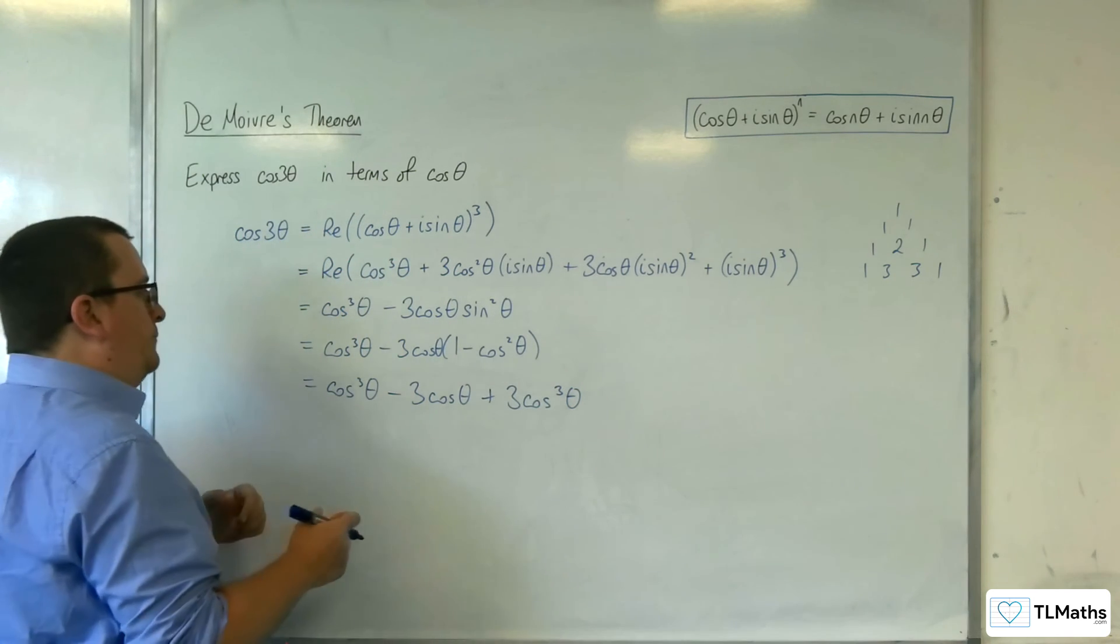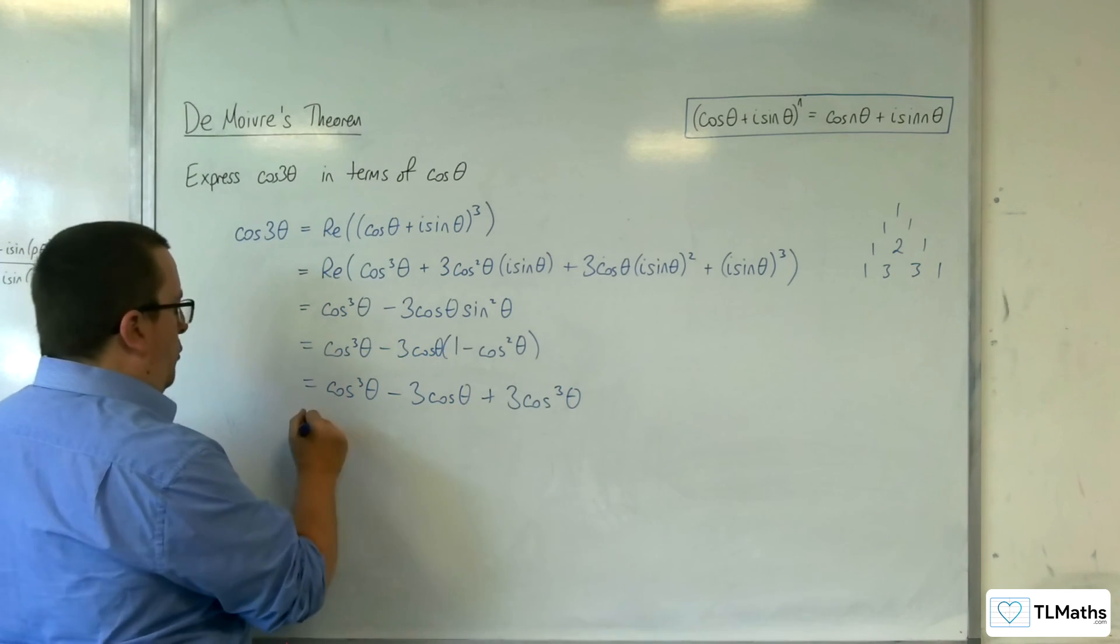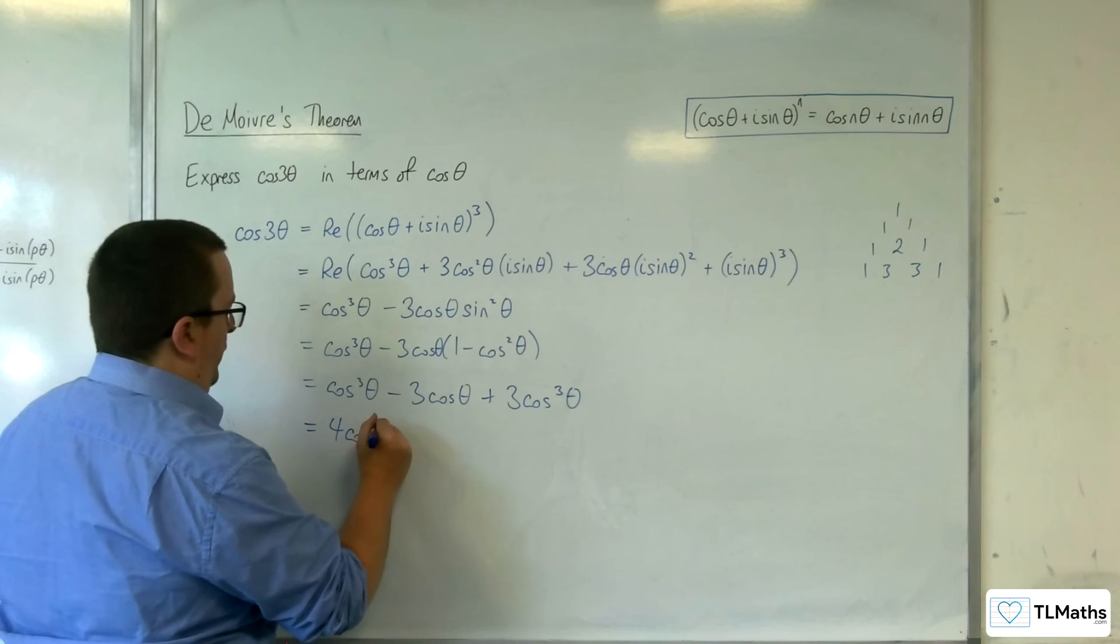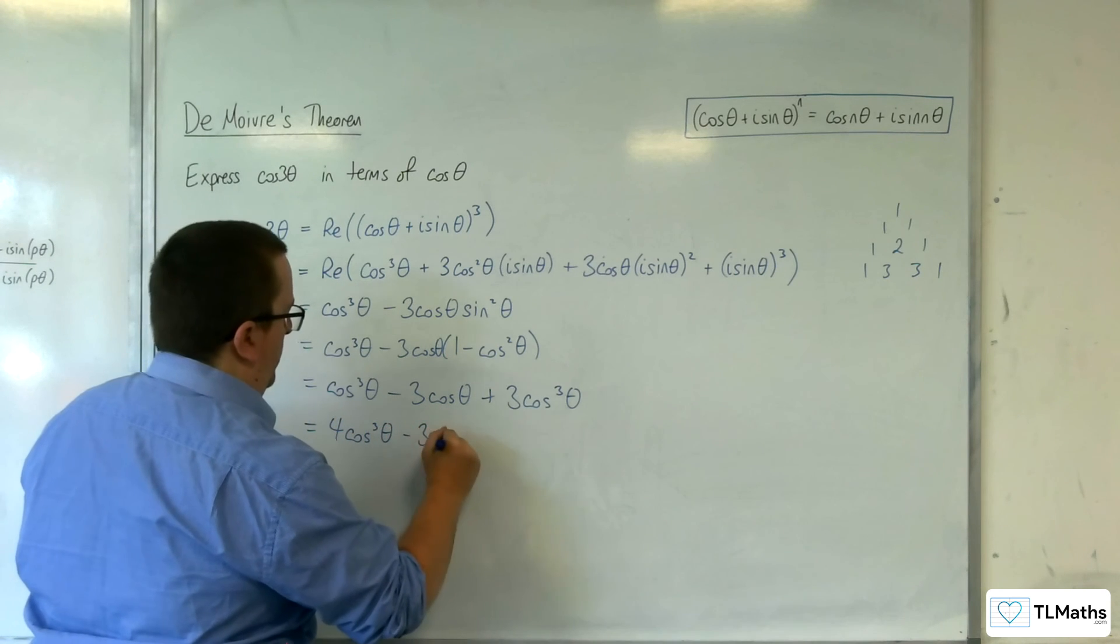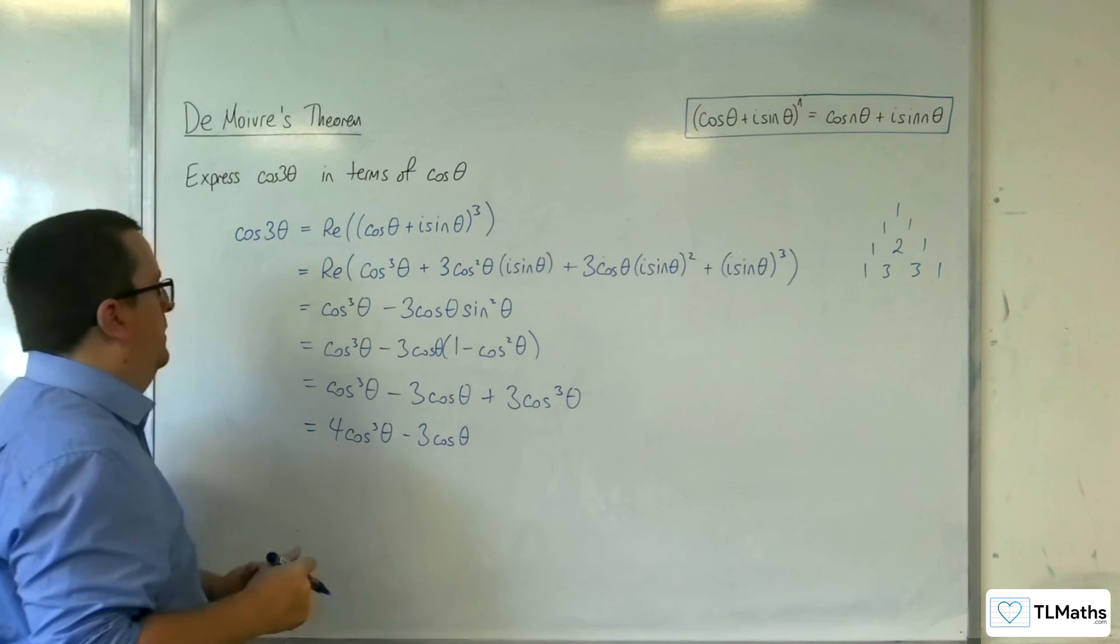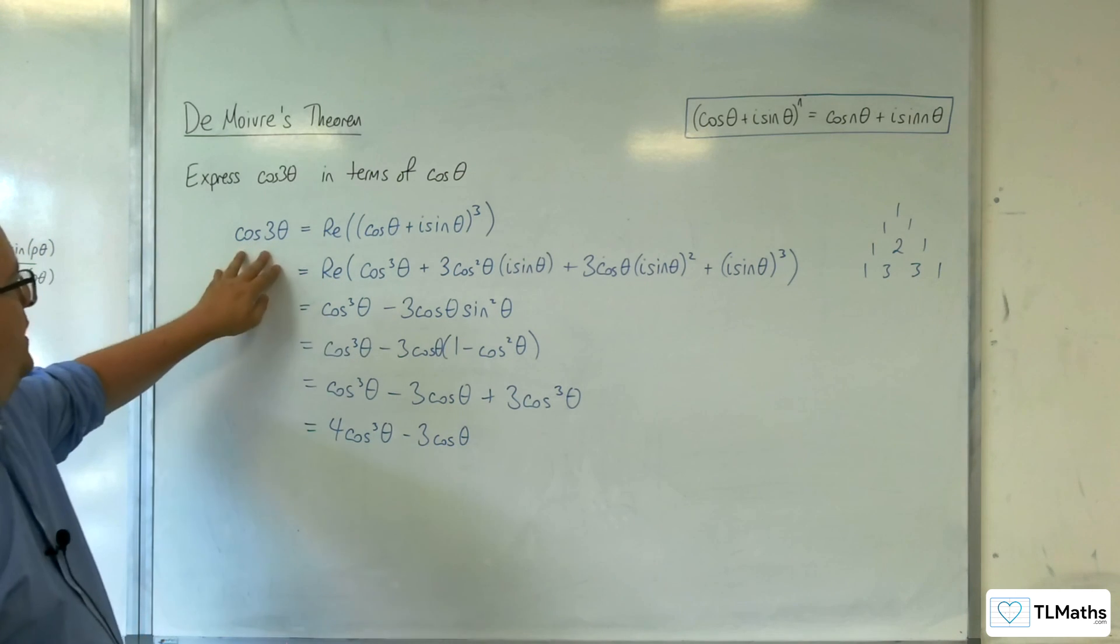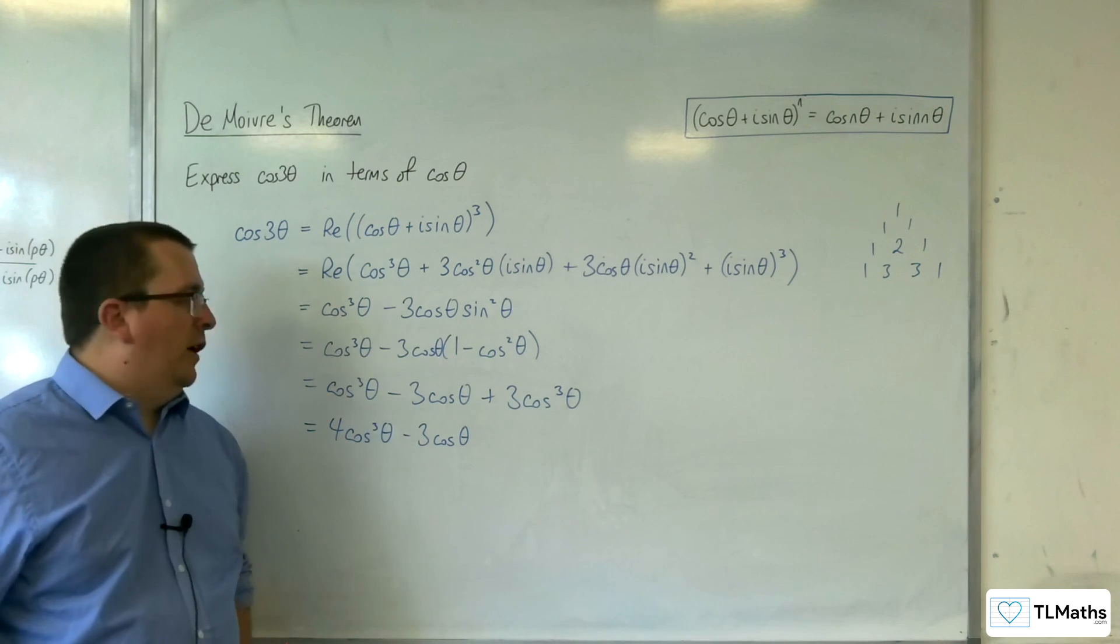So we've got 4 cosine cubed theta take away 3 cosine theta. And so there you have cosine 3 theta in terms of cosine theta.